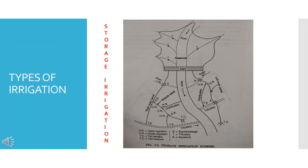This is a graphical representation of storage irrigation. The dam is constructed across the river; a reservoir is formed on the upstream side. The river continues downstream, where left and right bank canals are provided. Branch canals and distributaries supply water to the fields.